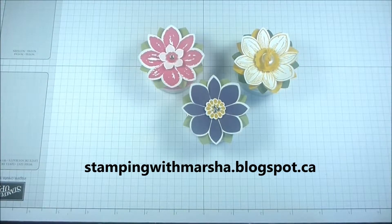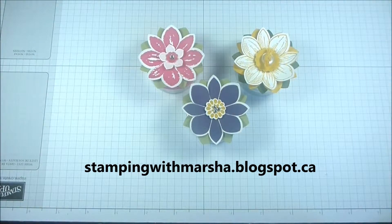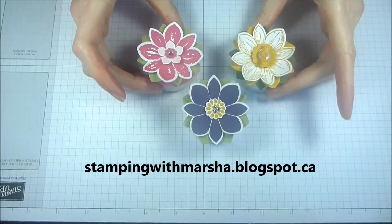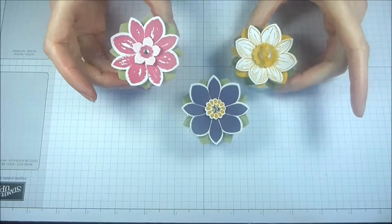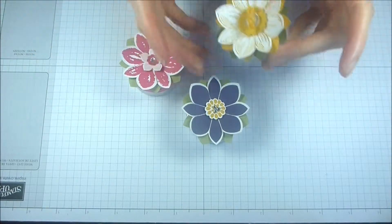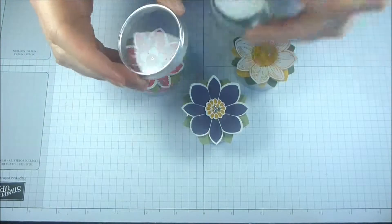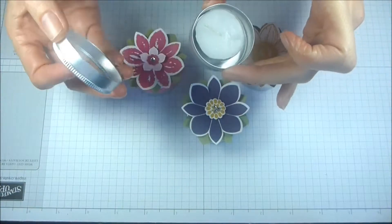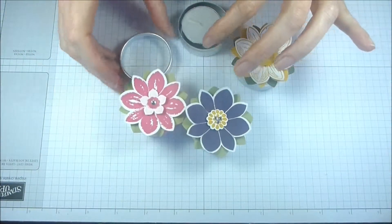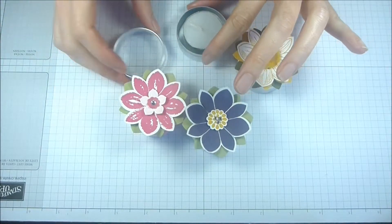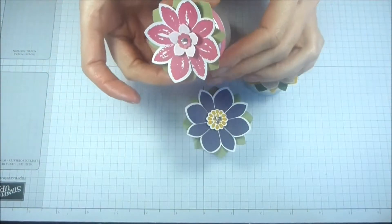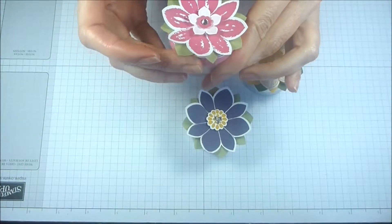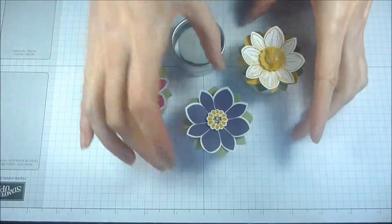Hi everyone, it's Marsha from steppingwithmarsha.blogspot.ca. Today I have a fun little project to share with you. Aren't they cute? They are little tea light holders. Here's one. This is how it will start with these little containers. You just pop the tea light in and close the lid. So this is the finished product. Aren't they cute? I have a little ribbon around some of them.